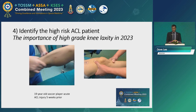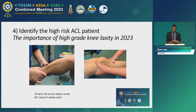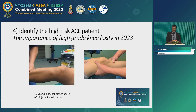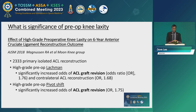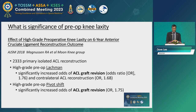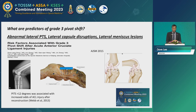In 2023, the fourth point: not all ACLs are the same. It's important to identify the high-risk ACL patient where you have a significant pivot of 2-plus or 3-plus laxity. What is the significance of pre-op knee laxity? From the MOON group in 2018, we know that if you have high-grade Lachman or high-grade pivot shift, it increases your odds of graft revision by up to 1.7 to 1.8 times. What gives you increased pre-op laxity? This paper from Ji Sui Tan from the late Feng Hua's group talks about abnormal lateral posterior tibial slope, lateral capsule disruptions, and meniscal lesions — these three factors give you increased laxity.